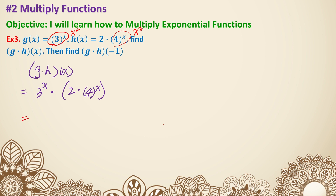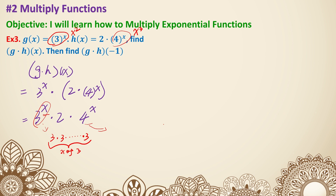Now we can open the parentheses — it's all multiplication: 3 to the x power times 2 times 4 to the x power. Since 3 to the x power means x amount of 3's multiplied together, and 4 to the x power means x amount of 4's, when you pair them you get x amount of 12 — so those combine to give 12 to the x power. The 2 in the front doesn't have an exponent, so it stays as a coefficient in front. That gives us 2 times 12 to the x power.